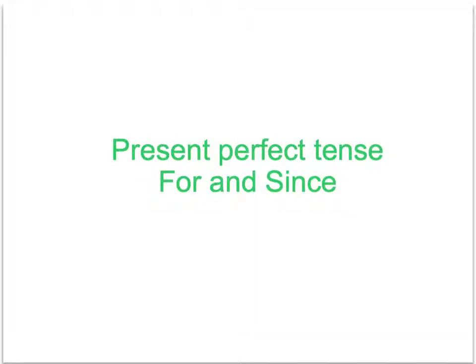Hello and welcome. Today we are going to study the uses of 'for' and 'since' in the present perfect. In the present perfect, we express an action that happened before and has an influence on the present.